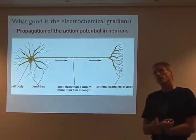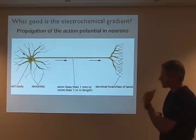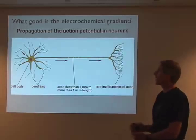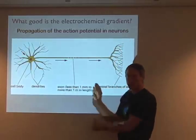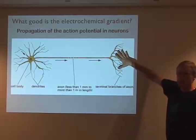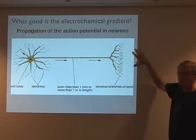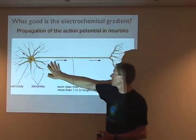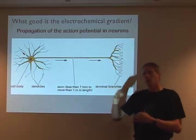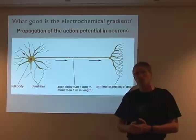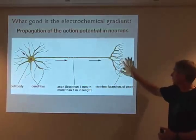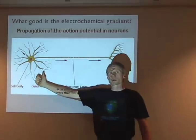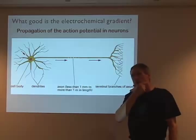Why do we care about the electrochemical gradient? Because we have nerve cells. Nerve cells have a cell body, a long part called the axon, and then terminal branches which send the message to the next cell. What I'm going to talk about next is propagation of the action potential — a switching of charges across the membrane, which is an electrical signal from the cell body towards the terminal branches. The action potential always goes in one direction, and I'm going to tell you why.